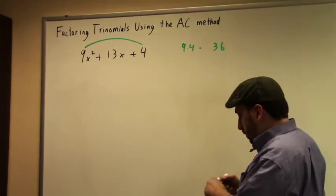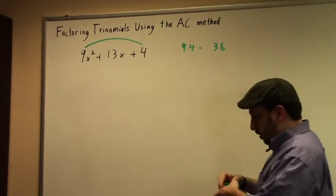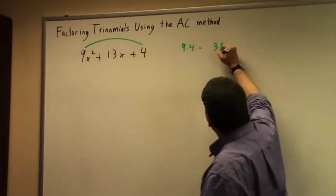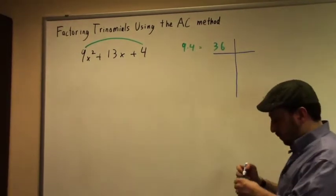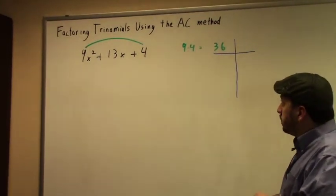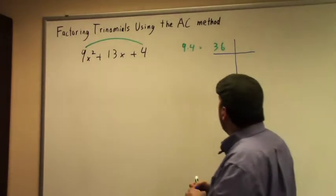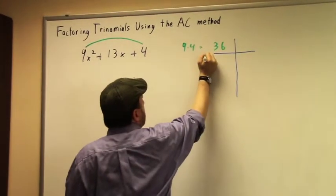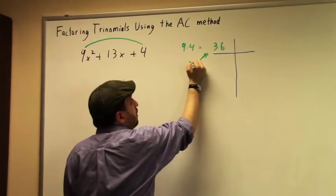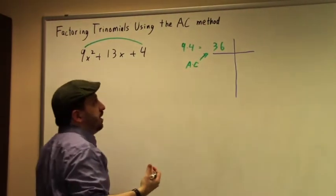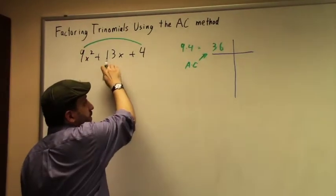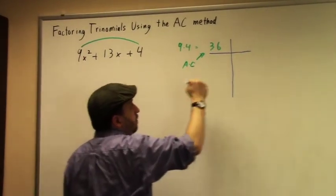And what I recommend that you do is you create a T-chart. So what we're putting here is our A times C. And what we're going to put on the other side of our chart is 13, that middle term, our B.